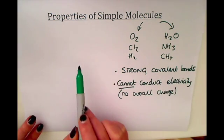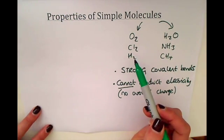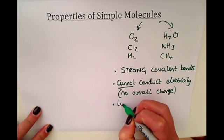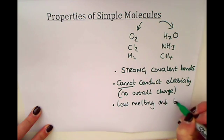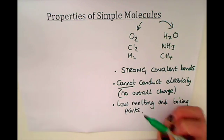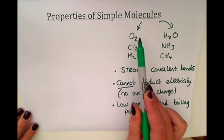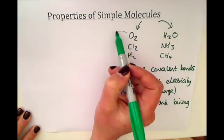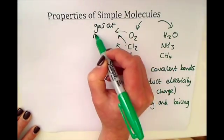Simple molecules can exist as solids, liquids, or gases. Many of them at room temperature are gases, and they have low melting and boiling points compared to other substances. I'll always use oxygen as an example of a simple molecule to help remember that they have low melting and boiling points — because oxygen, like all of these, is a gas at room temperature.